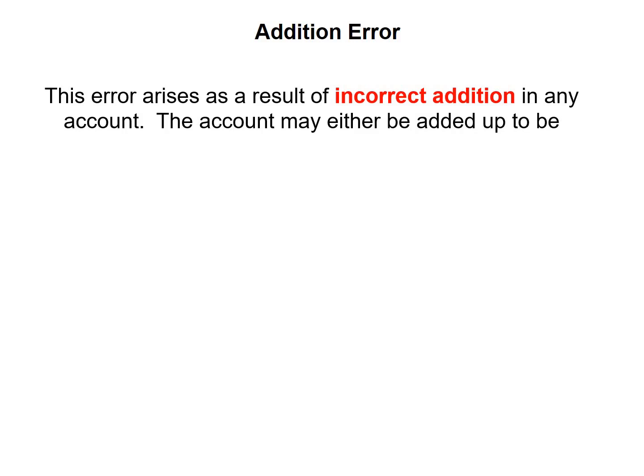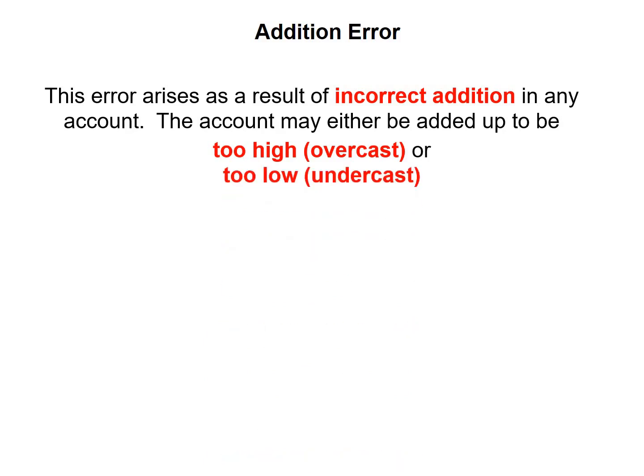The next error we will have a look at is our addition error. This error arises as a result of an incorrect addition in any account. The account may either be added up to be too high, which is an overcast, or too low, which is an undercast.